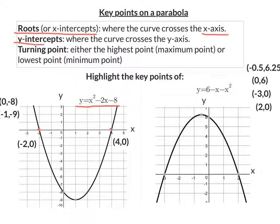Next, the y-intercepts. Now this is where the curve crosses the y-axis. So the y-axis is this one here, the vertical one, and it crosses at that point there, which is negative 8. And its coordinates are 0, negative 8.